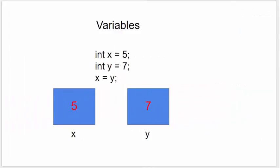Let's look at a slightly more complicated example now with two variables and their respective boxes. Here we have two variables, x and y, with x being initialized to the value of 5 and y being initialized to a value of 7. In the third line of code, we set x equal to y.